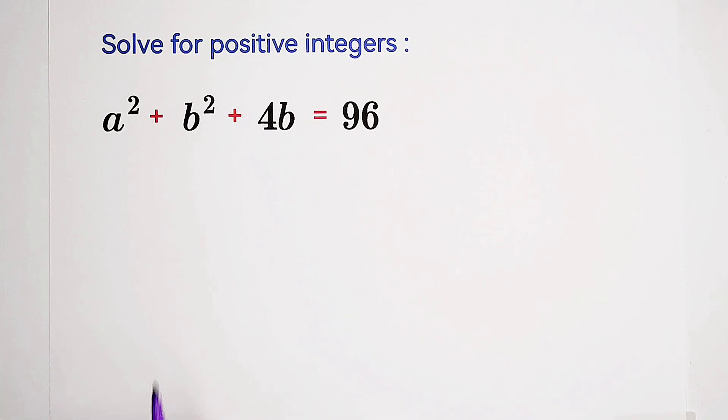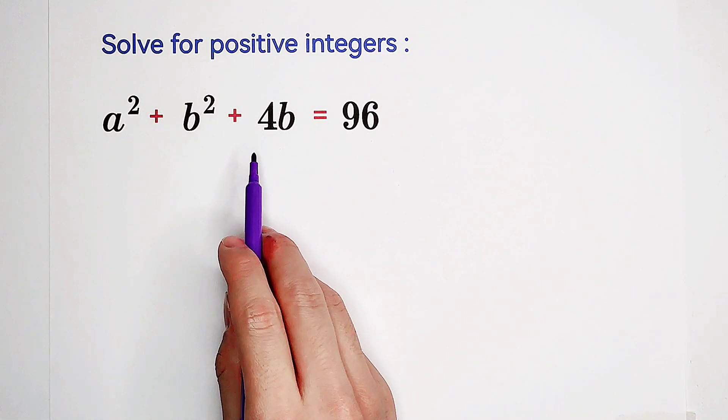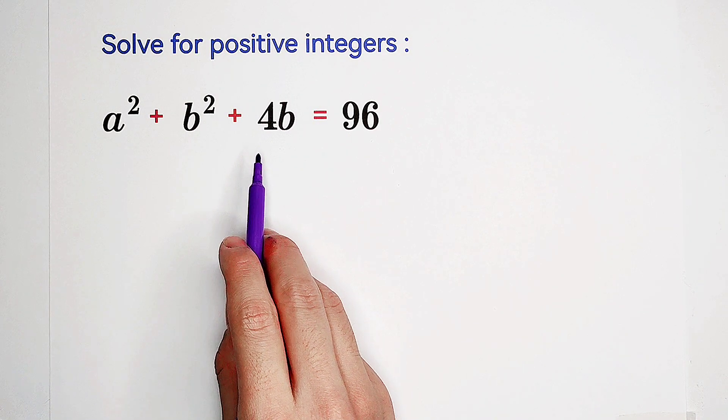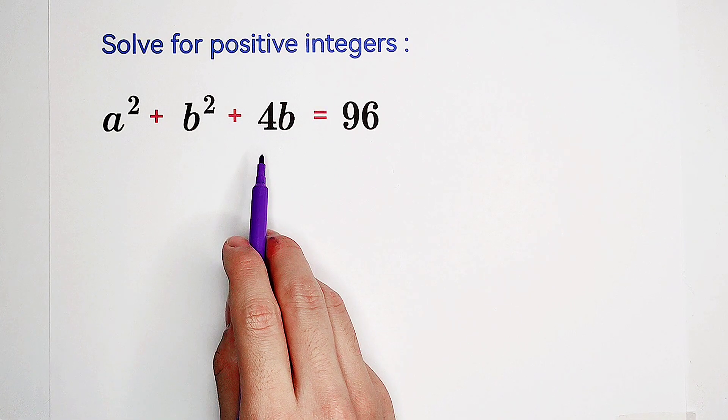Now, I can give you a hint. b squared plus 4 times b is a part of a perfect square.